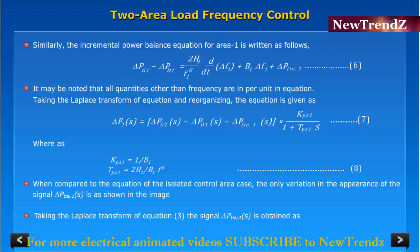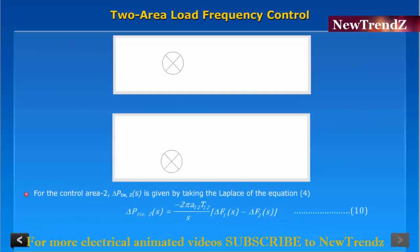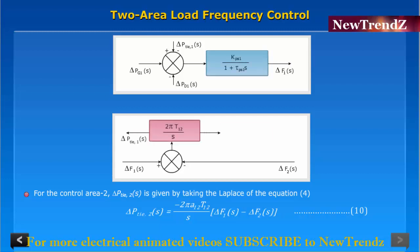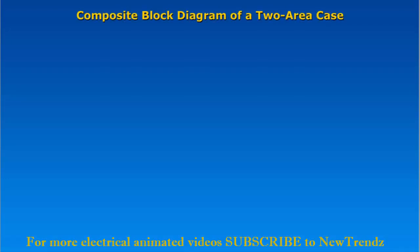The signal ΔPtie,1(s) is obtained as... But for control area 2, ΔPtie,2(s) is given by taking the Laplace of the equation for composite block.